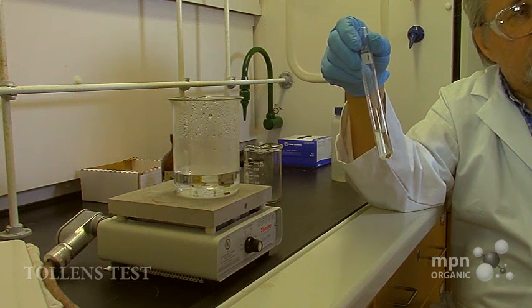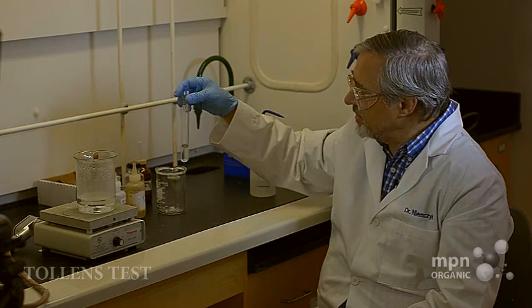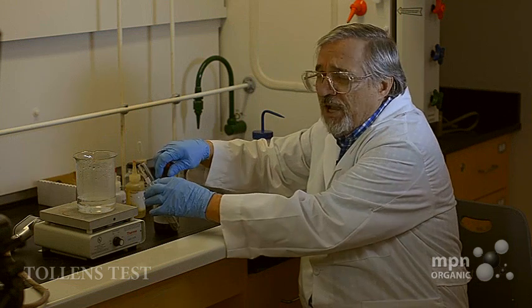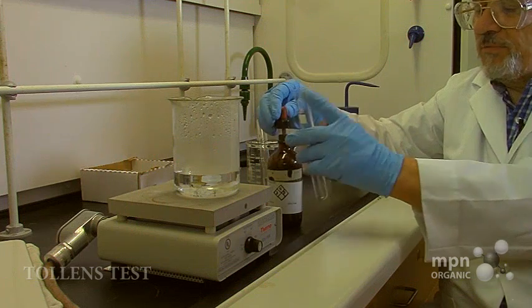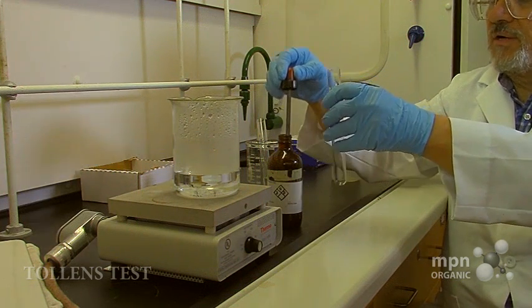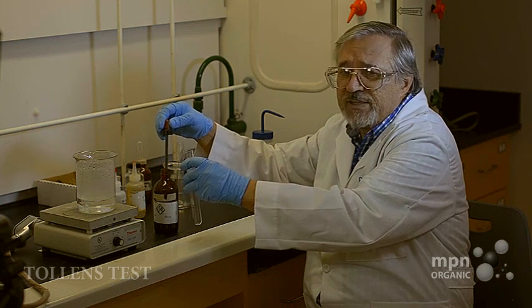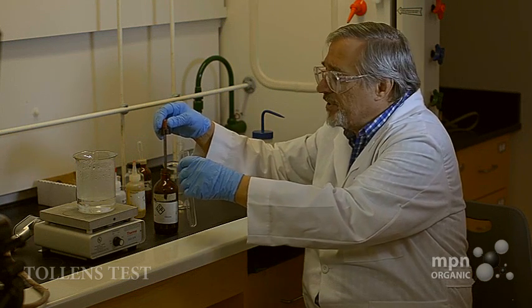So this aldehyde functional group is what we're going to see reacting in this test. So let's put this over here for the time being. To make up the Tollens reagent, it's actually very simple. Here I have a test tube, and the success of this hinges upon the fact that these test tubes are clean. You can't use a dirty test tube for this.